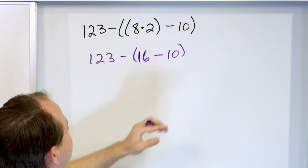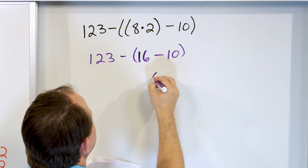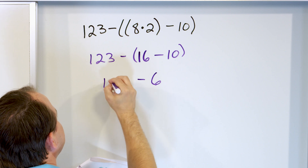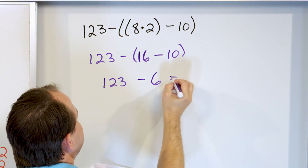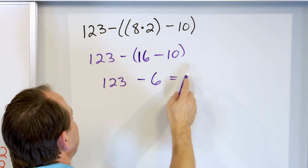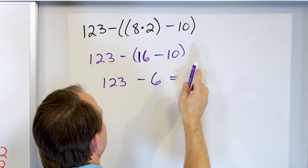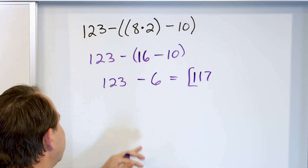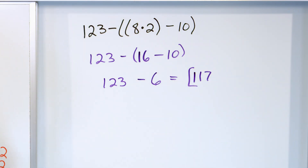Now we do this set of parentheses. What is 16 minus 10? It's just 6. We drop the parentheses after we calculate, and now we have 123 minus 6. Going down: 122, 121, 120, 119, 118, 117. 117 is the final answer. You could set it up and subtract over there if you want, but the answer is 117.